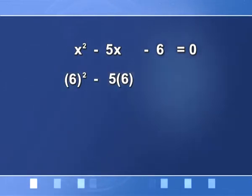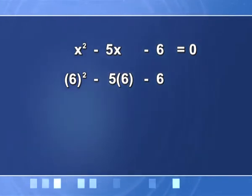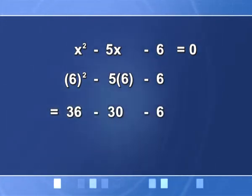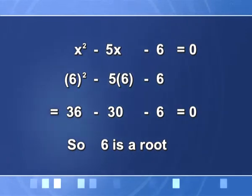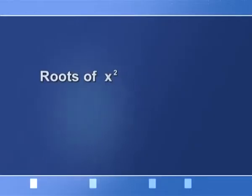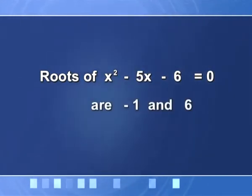We try another value: in place of x I take 6. I get 6² − 5×6 − 6, which on simplification gives me 36 − 30 − 6, which is again equal to 0. So 6 is also a root of this equation. The equation x² − 5x − 6 = 0 has got 2 roots: −1 and 6.